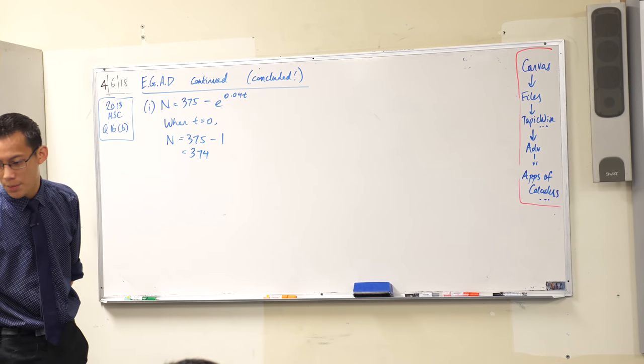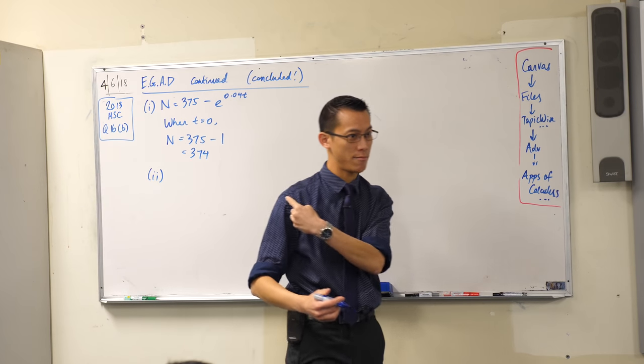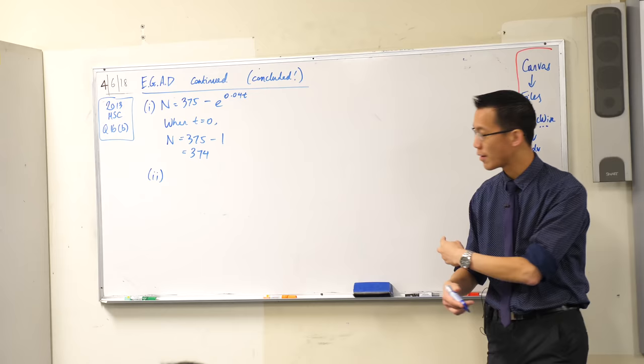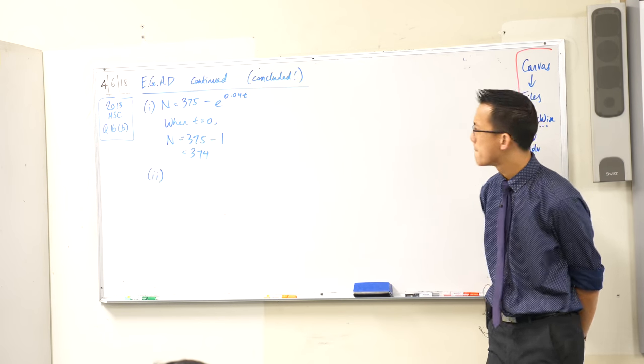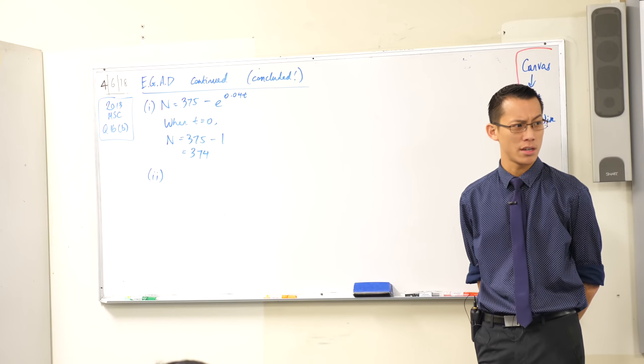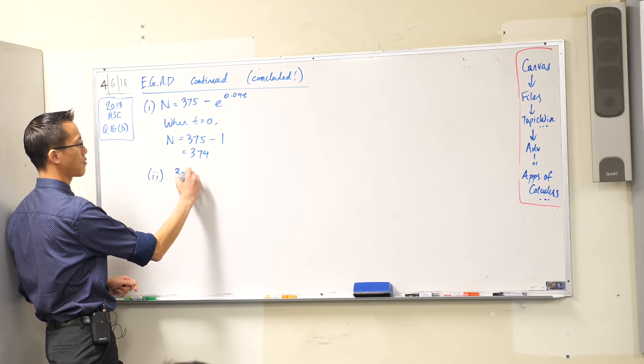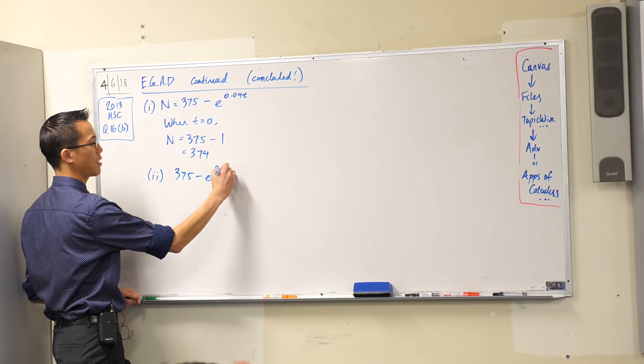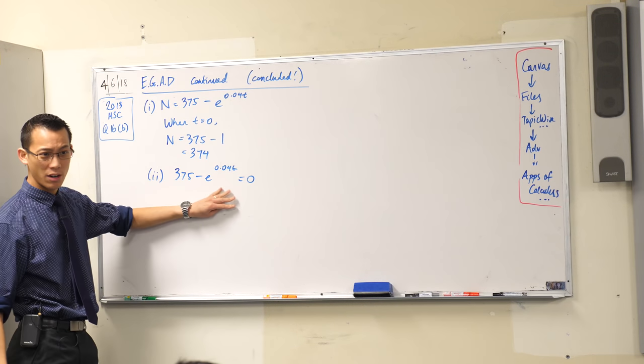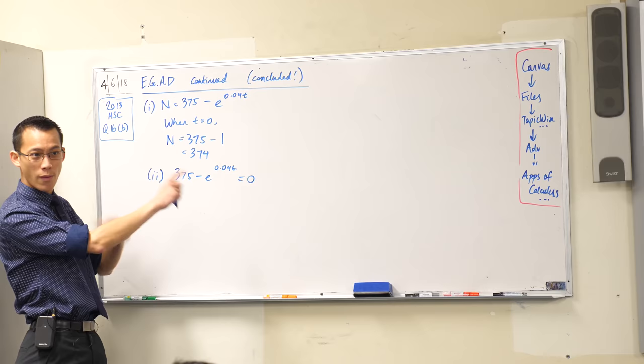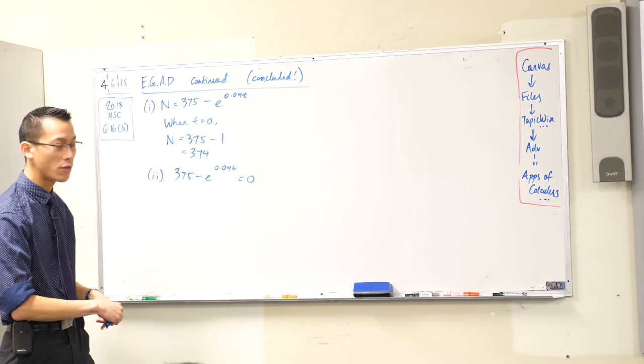When will the trout population be 0? Part 2. Okay. So I'm still dealing with this same equation in n, bless you, right? But I'm going to substitute in something different. What am I going to substitute into this? Instead of t equals 0, I'm going to substitute in n equals 0. That's when they're all gone. So you're going to have this, 375 minus that, that's going to equal 0. Okay. So we can go ahead and we can monkey about with this. We're going to have to rearrange. We're going to take logs of both sides. Can I let you do that? I'll give you a bit of time to work out your value of t.